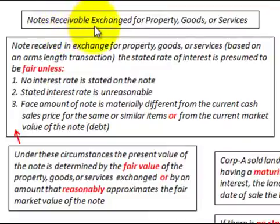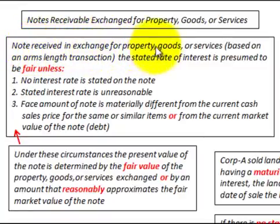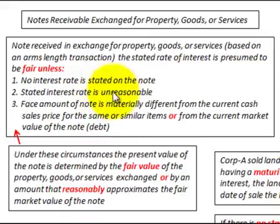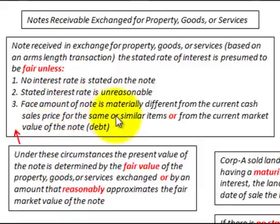We're going to be looking at notes receivable exchanged for property, goods, or services. A note received in exchange for property, goods, or services based on an arm's length transaction — the stated rate of interest is presumed to be fair, unless: one, no interest rate is stated on the note; two, the stated interest rate is unreasonable; or three, the face amount of the note is materially different from the current cash sales price for the same or similar items, or from the current market value of the note or the debt.